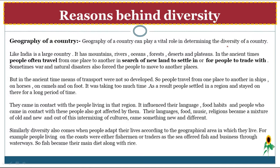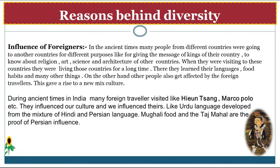People got affected by one another — their languages, food, music, and religions became a mixture of old and new, and out of this intermixing of cultures came something new and different. Diversity also comes when people adapt their lives according to their geographical area. For example, people living on the coast were fishermen or traders, as the sea offered fish and trade through waterways, so fish and rice became their main diet.